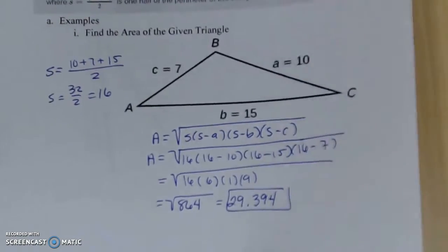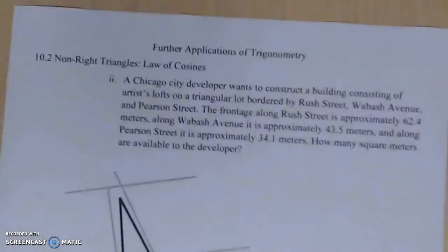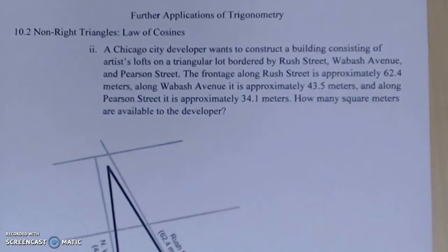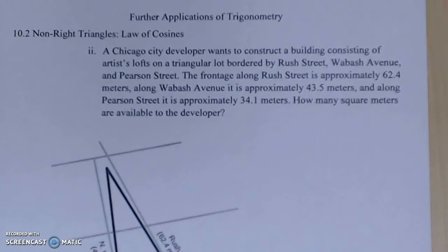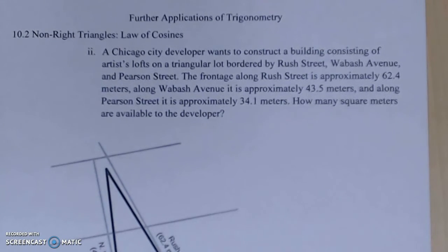Let's do an application problem. A Chicago developer wants to construct a building on a triangular lot bordered by Rush Street, Wabash Avenue, and Pearson Street. The front edge along Rush Street is approximately 62.4 meters, along Wabash Avenue it's 43.5 meters, and along Pearson Street it's 34.1 meters.